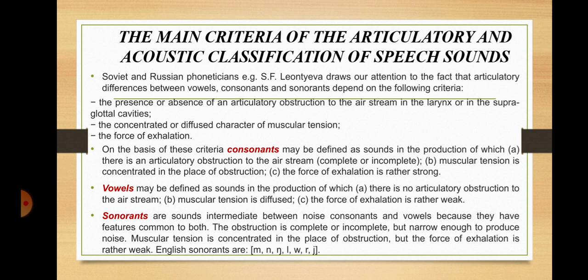Vowels may be defined as sounds in the production of which there is no articulatory obstruction to the air stream; muscular tension is diffused and the force of exhalation is rather weak. Sonorants are sounds intermediate between noise consonants and vowels, having features common to both. The obstruction is complete or incomplete but narrow enough to produce noise; muscular tension is concentrated in the place of obstruction, but the force of exhalation is rather weak. English sonorants are: m, n, l, w, r, j.